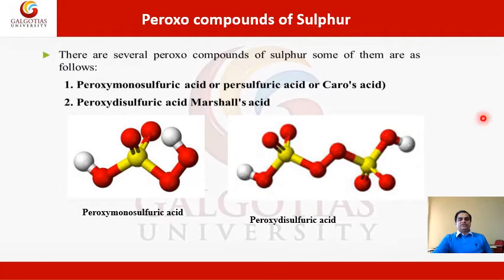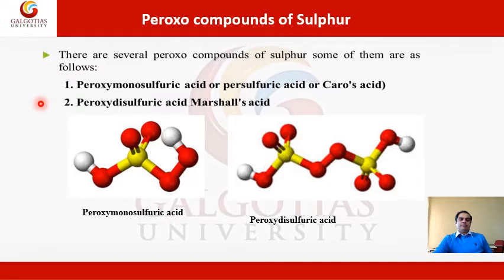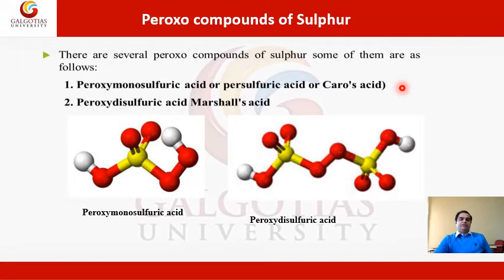Now let us discuss about peroxo compounds of sulfur. There are several peroxo compounds of sulfur, of which we are discussing two types. The first is peroxy monosulfuric acid, which is also known as persulfuric acid and also named as Caros acid. The second is peroxydisulfuric acid, also named as Marshall's acid. These are the two important peroxo compounds of sulfur that can be utilized for various purposes.